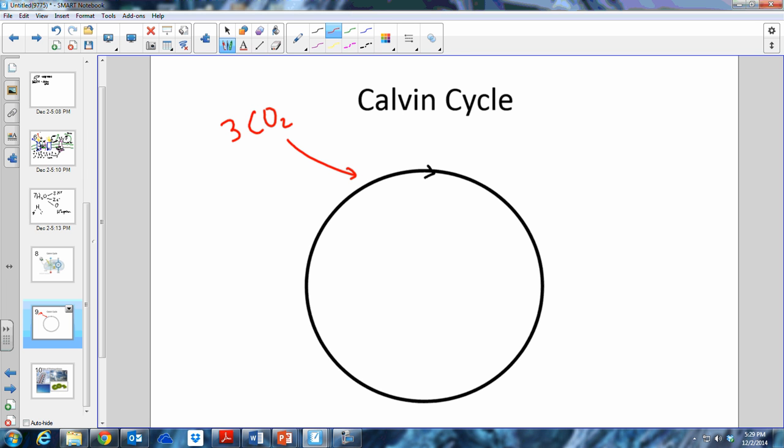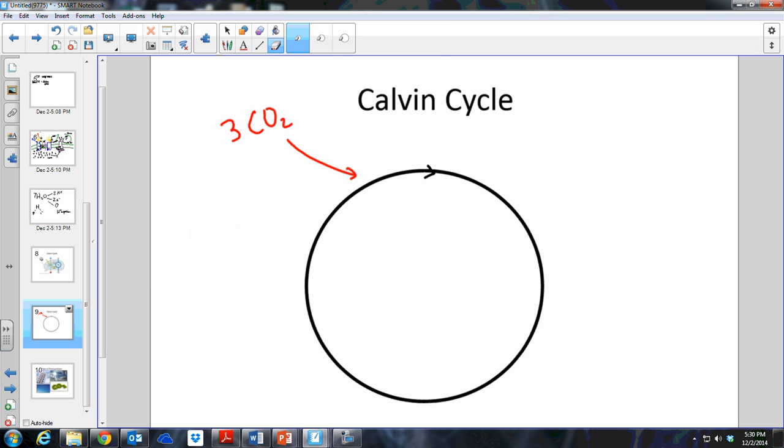And so we're going to be fixing these carbons. And the way that we do that is they will combine with five three-carbon sugars from the end of the Calvin cycle. Remember, we start at the end with a cycle. And so right here at the end, we have five three-carbon sugars. Strike that. Reverse it. Three five-carbon sugars there at the end of the Calvin cycle. And so those three five-carbon sugars are going to combine with the three CO2 molecules. And in order to do that, there is an enzyme here called rubisco.